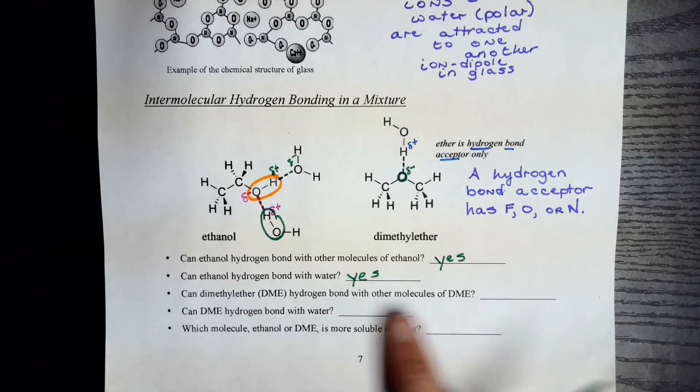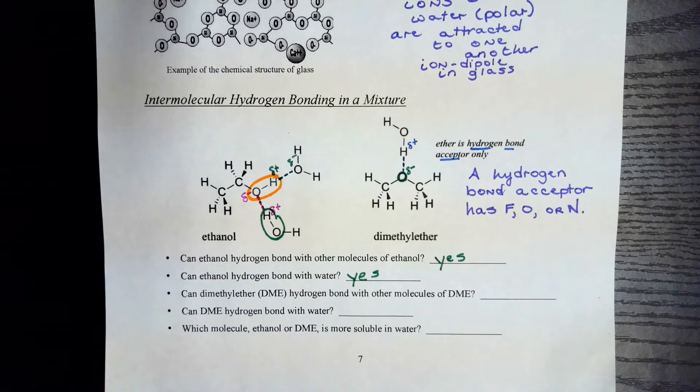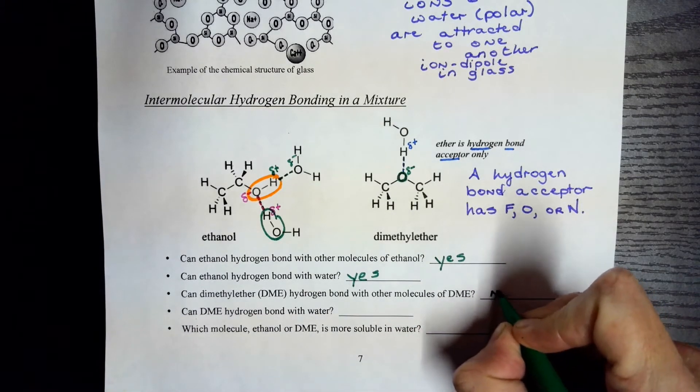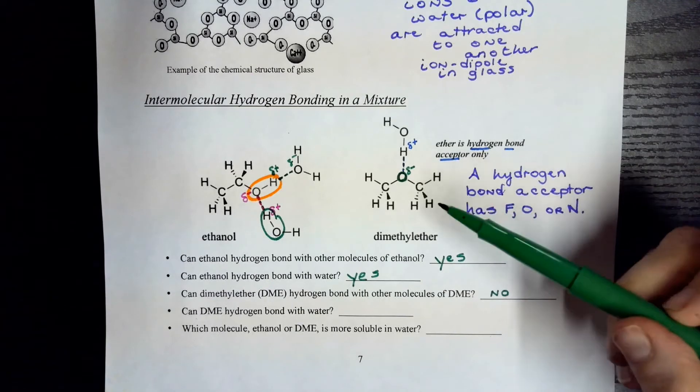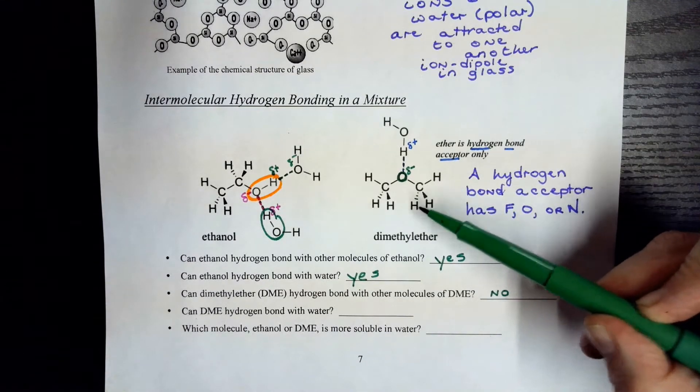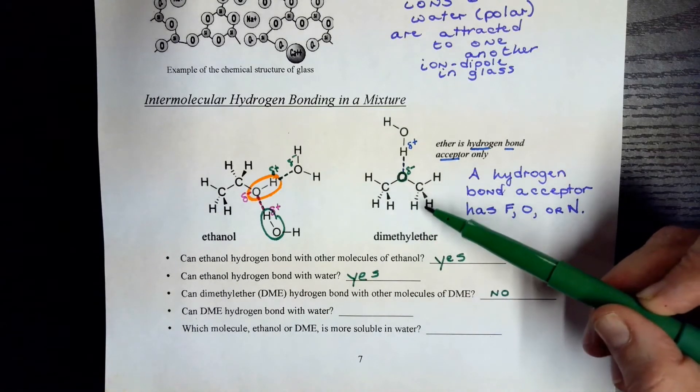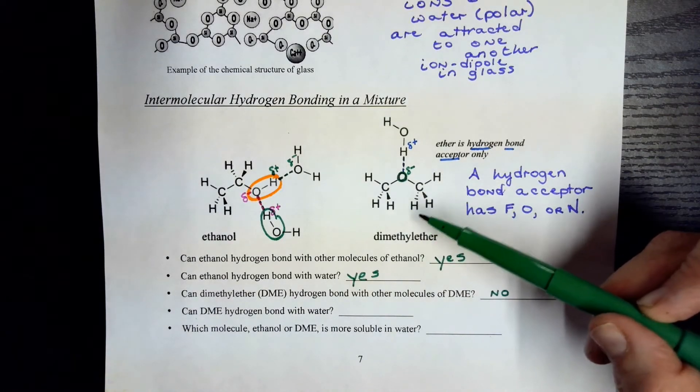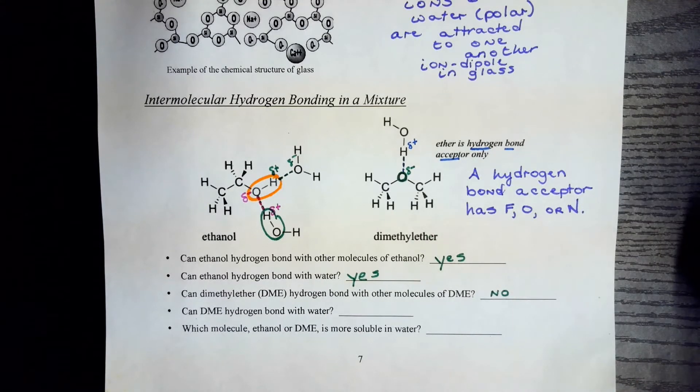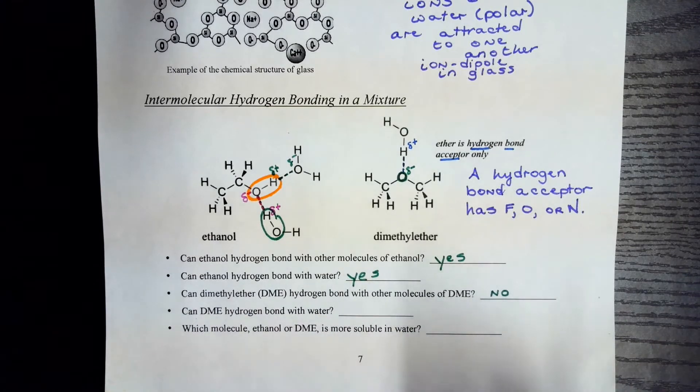Can DME hydrogen bond with other molecules of DME? Well, the answer here is no. Because these hydrogens are not directly bonded to oxygen, fluorine, or nitrogen, they're not positive enough to participate in hydrogen bonding. The pure liquid, the pure sample of DME won't have the hydrogens that it needs to participate in hydrogen bonding.